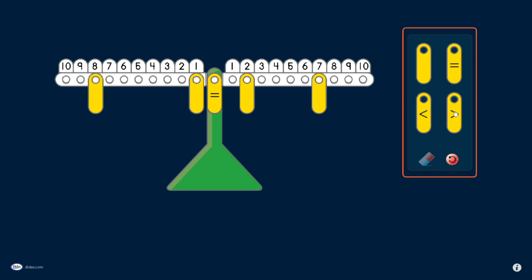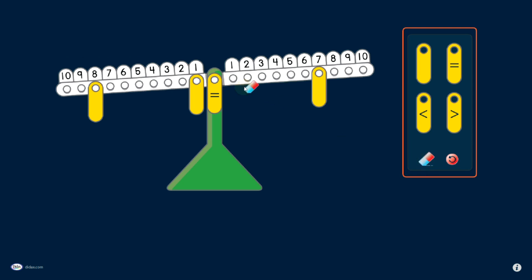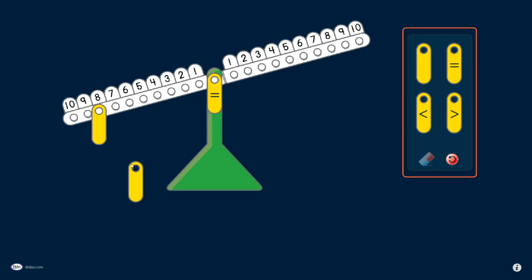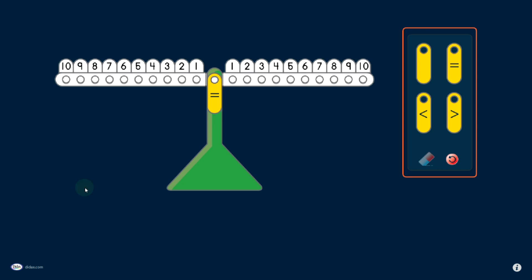In addition to the weights and the equality symbols, I also have an eraser tool. This allows me to remove the weights one at a time. I can also remove those weights just by clicking and dragging them off of the balance.